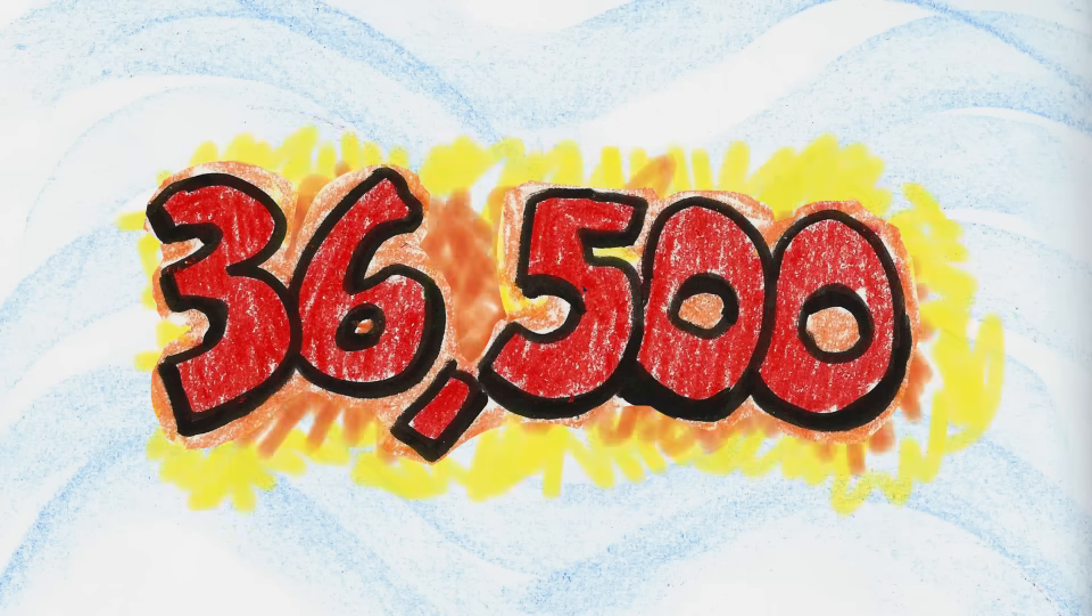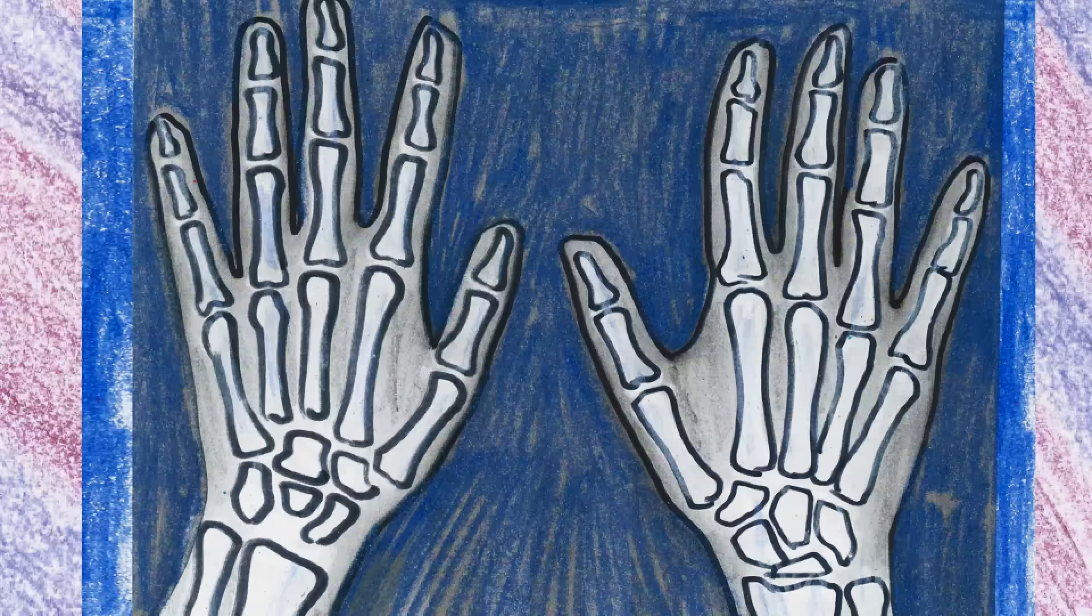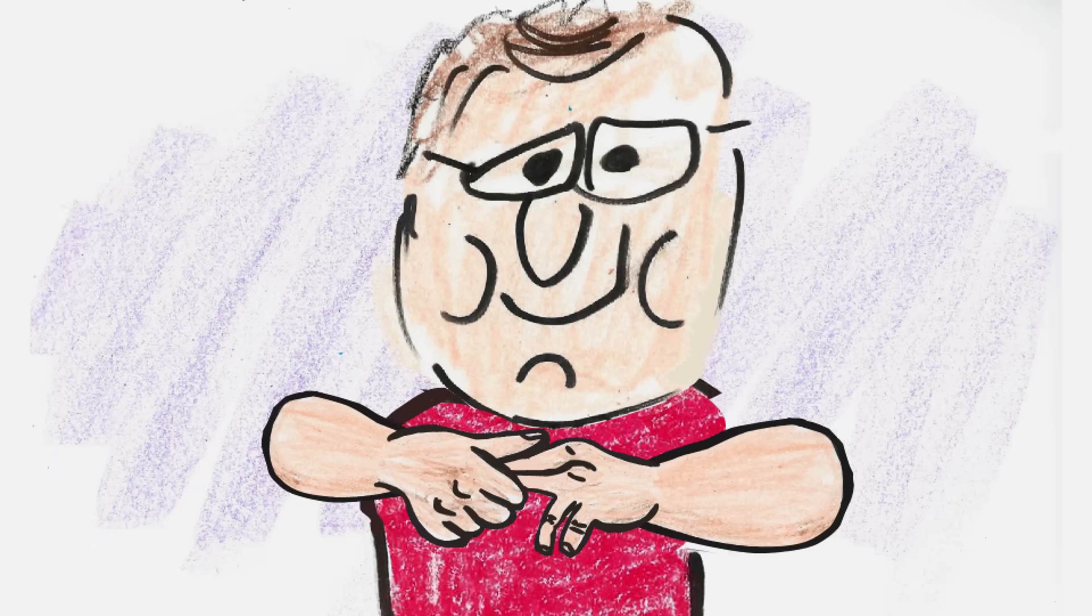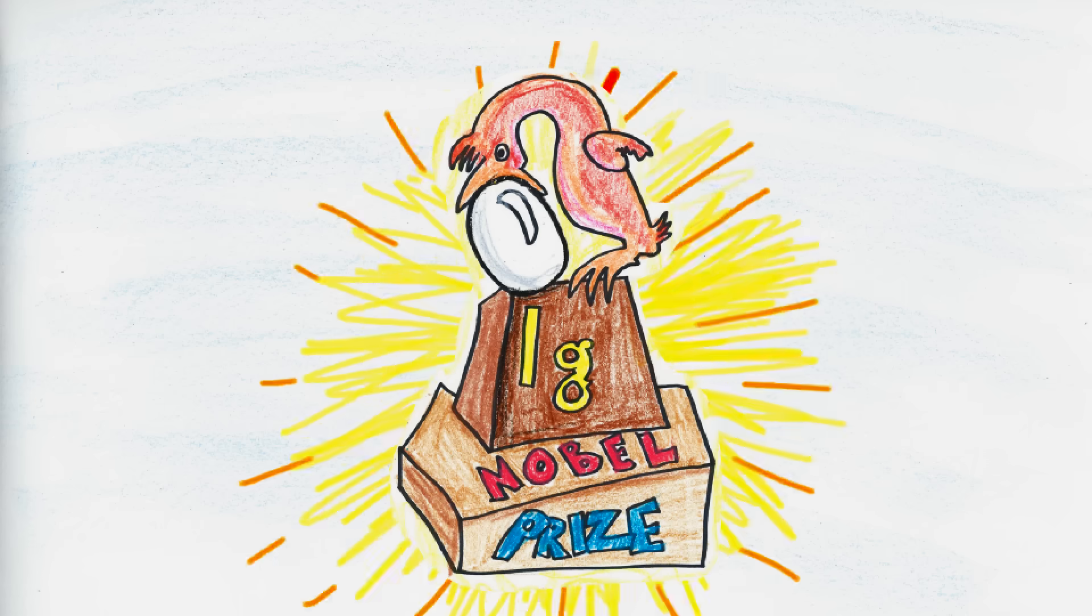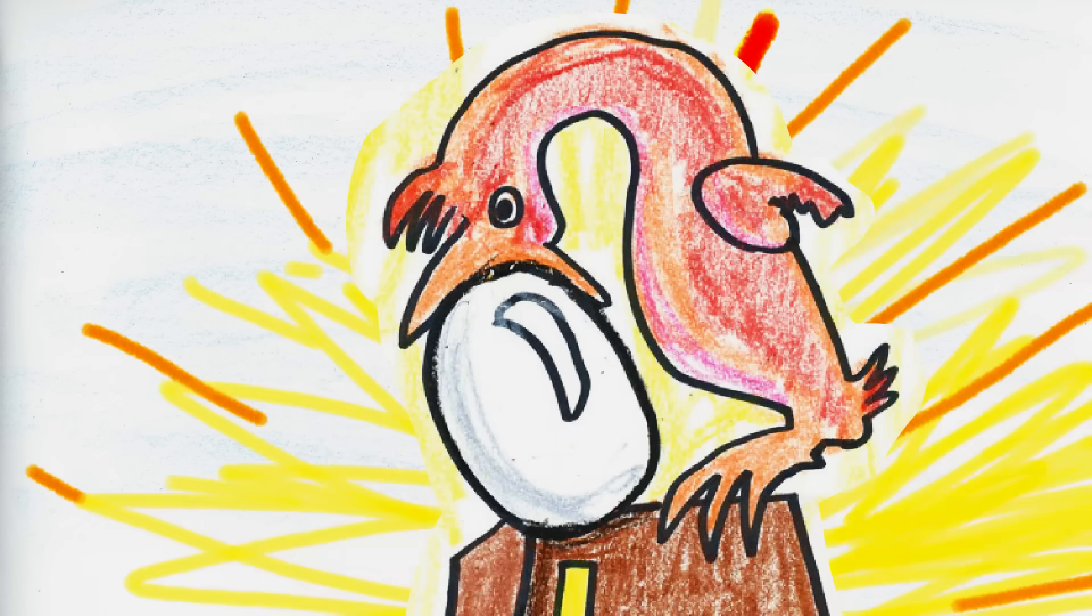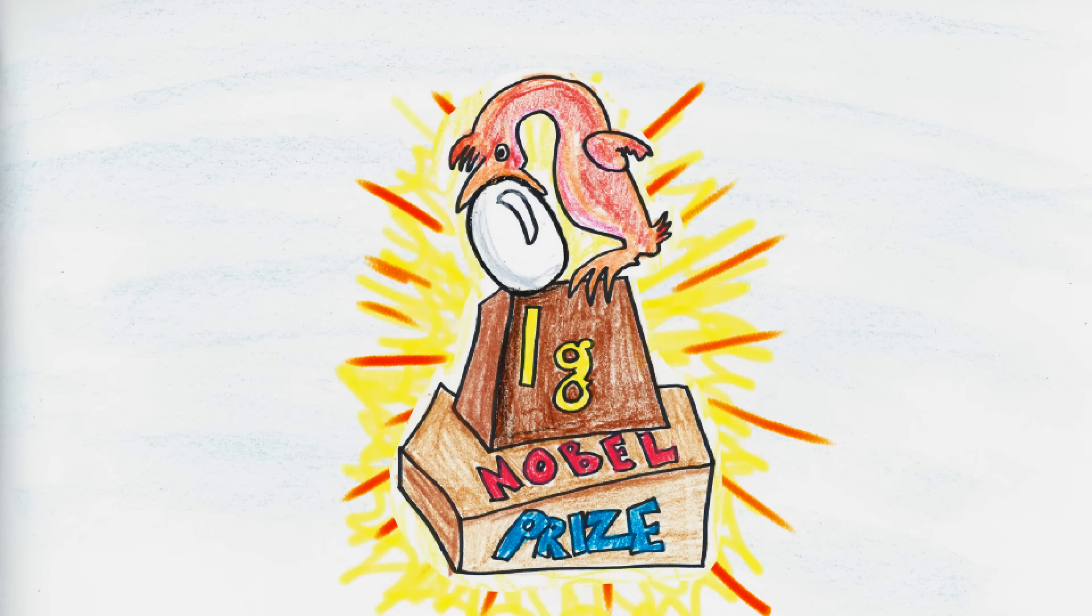36,500 cracks later, both hands were arthritis-free. For this selfless act of devotion to science, Dr. Unger received an Ig Nobel Prize, a parody of the Nobel Prize that recognizes wacky but weirdly fascinating scientific accomplishments.